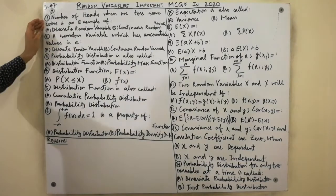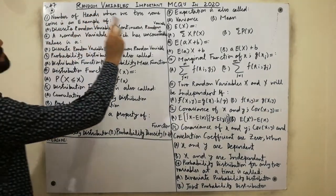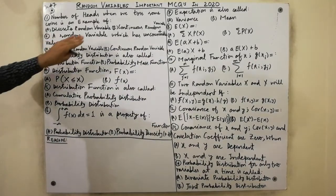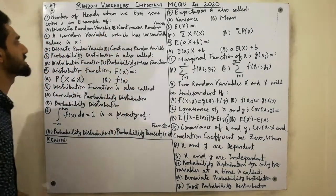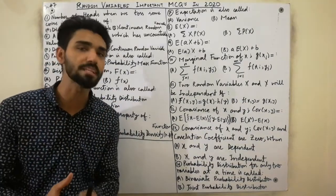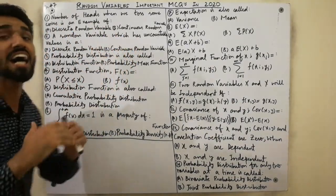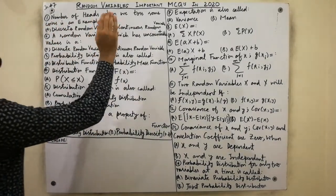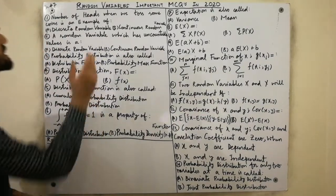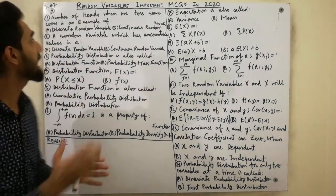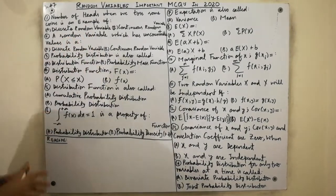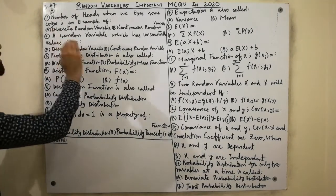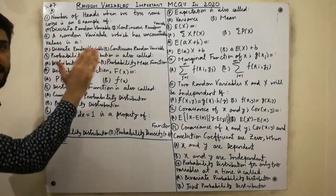Here is the first MCQ: the number of heads when we toss some coins. First, let me explain discrete and continuous random variables. A discrete random variable has a countable number of values, while a continuous random variable has an uncountable number of values. When we toss two coins and count the number of heads, we can count them — so this is an example of a discrete random variable.